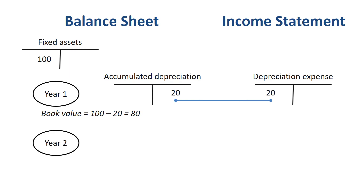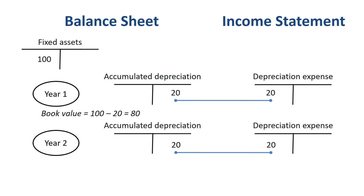In year 2, you repeat the same depreciation journal entry and get to a book value of $60,000, and on and on for years 3, 4, and 5.